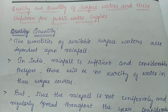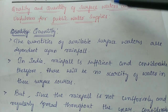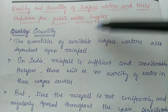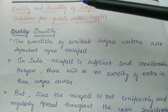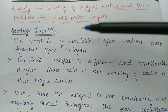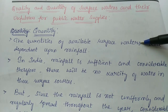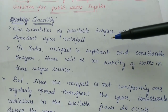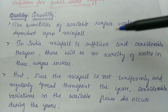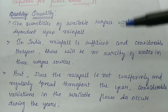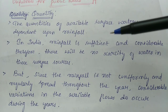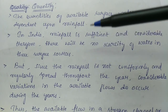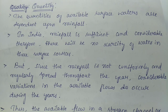Let us discuss about the quality and quantity of surface waters and their usefulness for public water supplies. First, let us take up the quantity. The quantity of available water from surface water sources is mainly dependent on rainfall, and in India rainfall is sufficient and considerable, therefore there is generally no scarcity of water from surface sources.